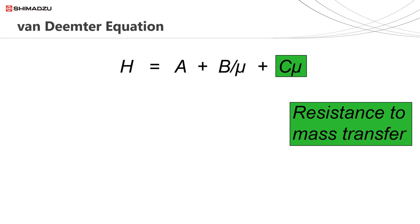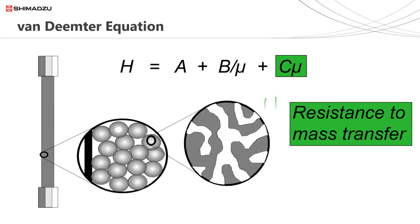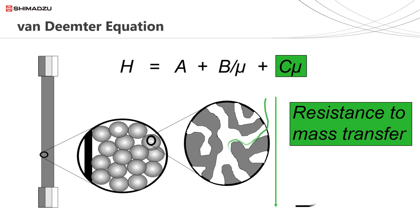The last term, the C term, or resistance to mass transfer, is sometimes referred to as the rate of diffusion or the kinetics of diffusion. It is typically the largest contributor to increased plate height. It's related to how efficiently and effectively analytes are able to diffuse into and out of the region of the column containing the stationary phase. The path that the analyte takes is known as the diffusion path — the shorter the path length, the less dispersion that takes place between the analytes diffusing into and out of the particle and the analytes being carried by the mobile phase. The contribution to band broadening from resistance to mass transfer is proportional to flow rate. As flow rate is increased, more dispersion takes place, resulting in a broader, more dispersed analyte band.